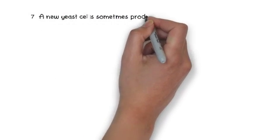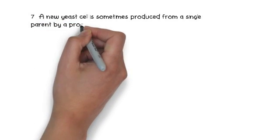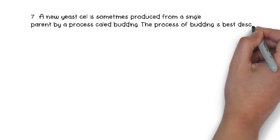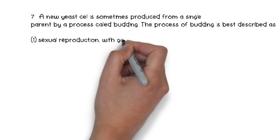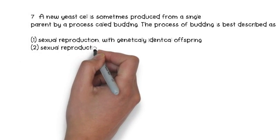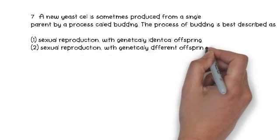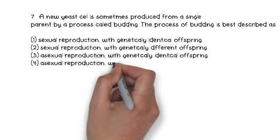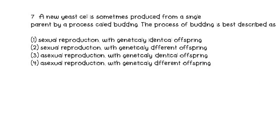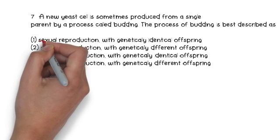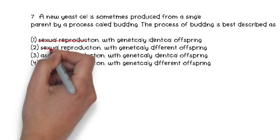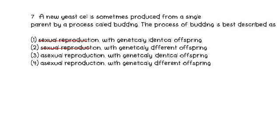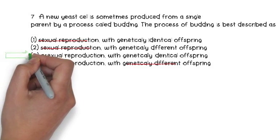Number 7 is a multiple choice question that many people get wrong because they are not reading carefully or marking up their exam. A new yeast cell is sometimes produced from a single parent by the process called budding. The process of budding is best described as: 1) sexual reproduction with genetically identical offspring, 2) sexual reproduction with genetically different offspring, 3) asexual reproduction with genetically identical offspring, or 4) asexual reproduction with genetically different offspring. The best way to do this is to mark it up. We know yeast is asexual, so we cross out sexual reproduction. Now, is asexual reproduction genetically identical or genetically different? We know asexual is genetically identical, so the answer is number 3.